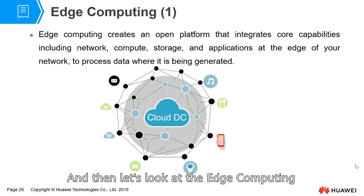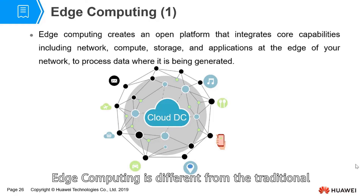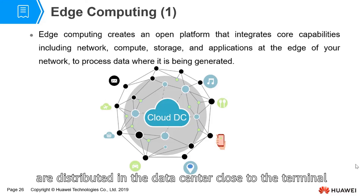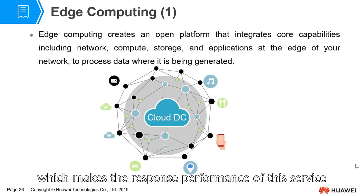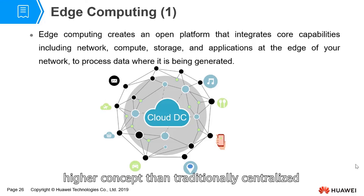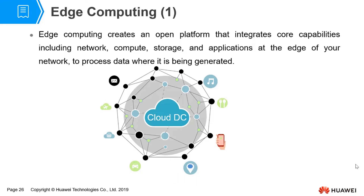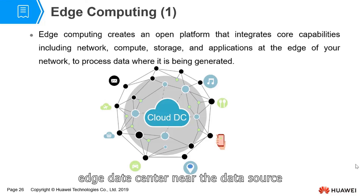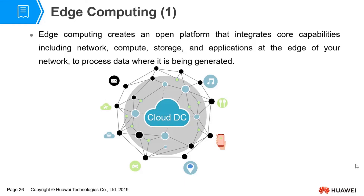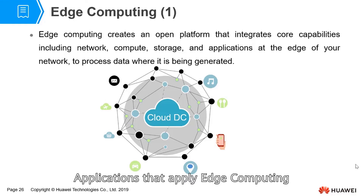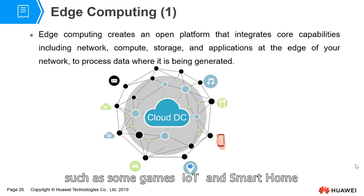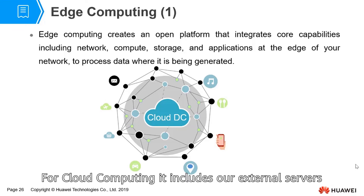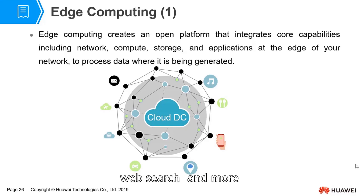Edge computing is different from the traditional centralized thinking. The main computing nodes and applications are distributed in data centers close to the terminal, which makes the response performance of services higher than traditional centralized cloud computing. Edge computing can be understood as using edge data centers near the data source to complete the computation process. Applications that apply edge computing include games, IoT, smart home, high-definition video, surveillance systems, as well as internal services, web search, and more.